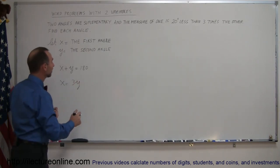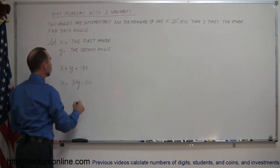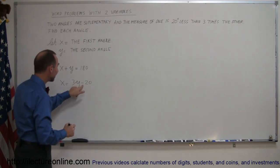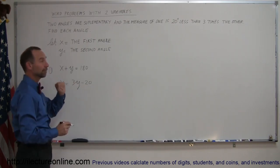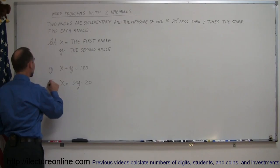And then 3y is three times the other, and then 20 degrees less means I subtract 20 from that, which means x equals 3y minus 20. And there's my second equation.